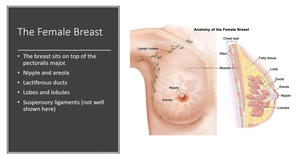Let's talk about the female breast. The breast sits on top of the pectoralis major, on top of the chest wall. External landmarks include the nipple and areola. You have your ducts, formerly known as lactiferous ducts — if a woman is lactating, milk flows through them and exits through the nipple. You have your lobes and lobules. You also have suspensory ligaments, which are not shown here but they suspend the breast tissue to provide structural support.